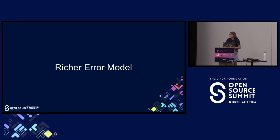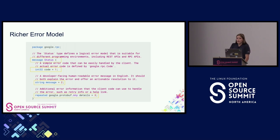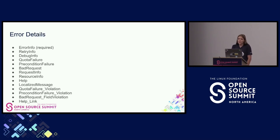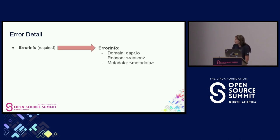Let's look at the inspiration for our errors package, which was the richer error model. You can see it here — it's a snippet of the richer error model developed and used by Google. We can see a message status containing our error code, error message, and relevant error details. Now let's take a look at all the possible error detail types: starting with error info, which we require in Dapr, then retry info, debug info, all the way down to our help link. Error info contains the relevant details: domain, reason, and metadata. All error detail types contain relevant attributes that should be filled in based on where it's at in the code base and what makes sense for that error.